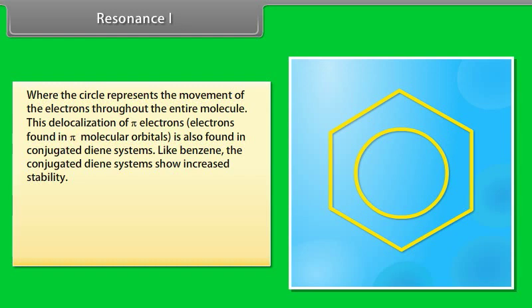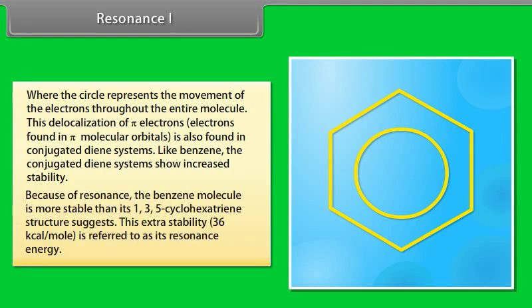Where the circle represents the movement of the electrons throughout the entire molecule. This delocalization of pi-electrons, electrons found in pi-molecular orbitals, is also found in conjugated diene systems. Like benzene, the conjugated diene systems show increased stability. Because of resonance, the benzene molecule is more stable than its 1, 3, 5 cyclohexatriene structure suggests. This extra stability, 36 kilocalories per mole, is referred to as its resonance energy.